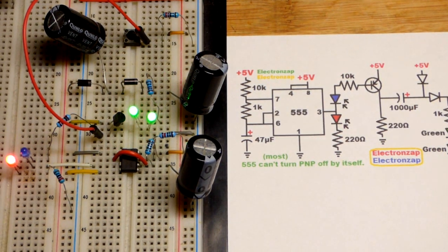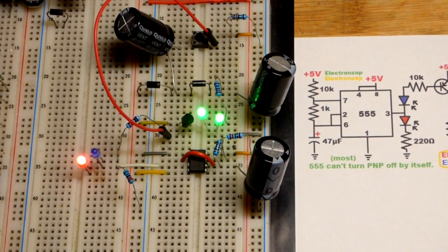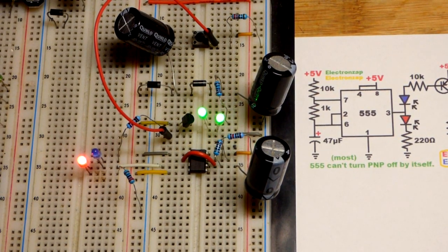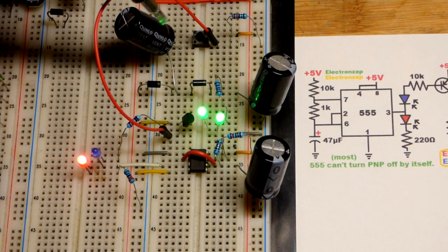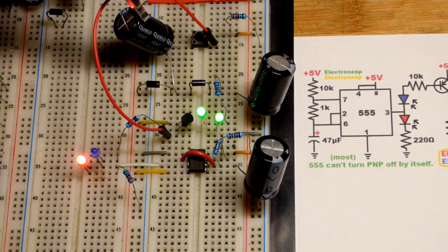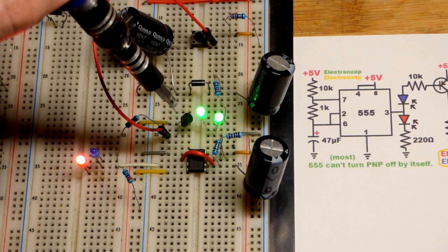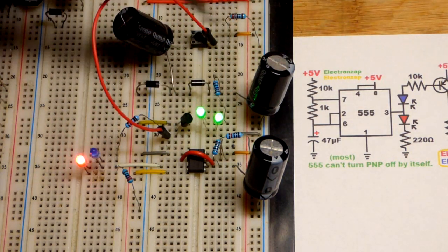But there you can see each time the output goes low we get a pulse of more voltage. So right now the capacitor is charging and then we get that low output there that turns the switch on.